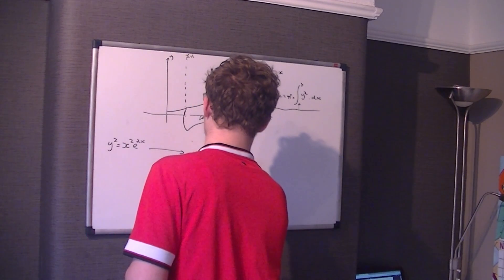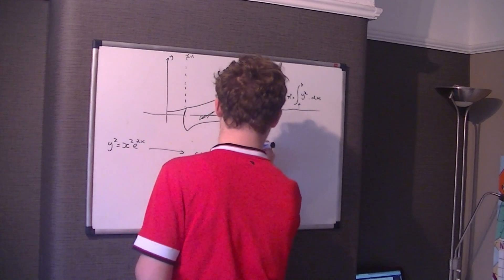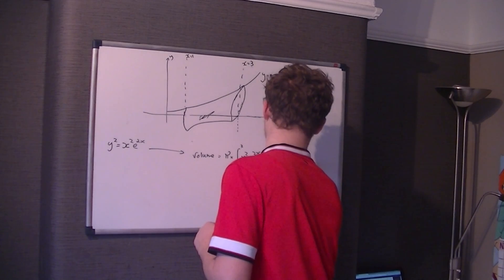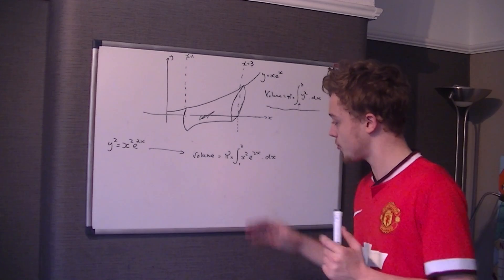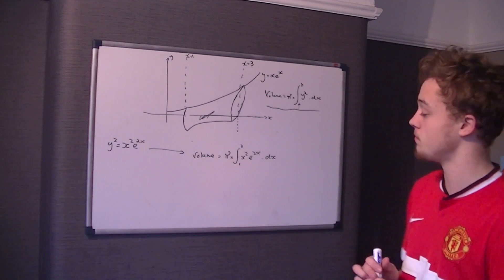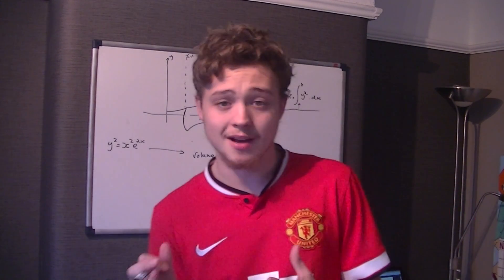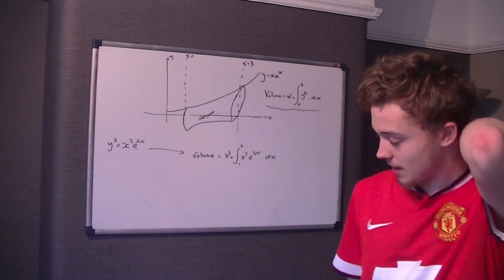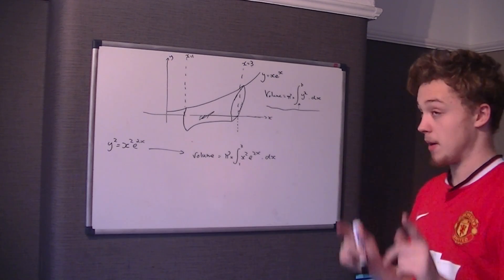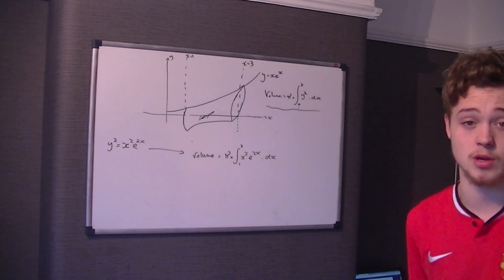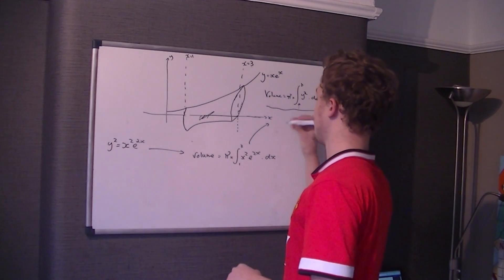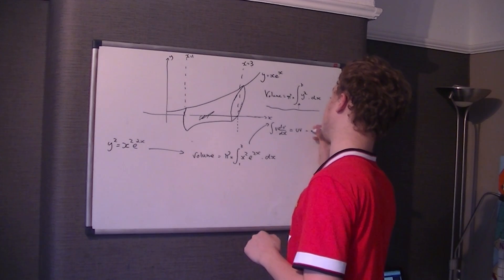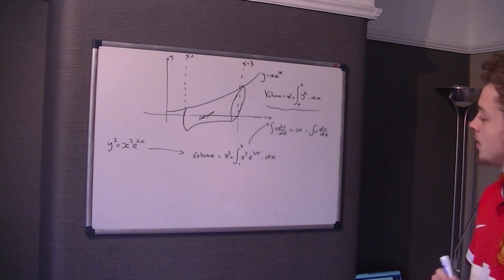Now follow up the rest of the formula. So volume equals π times the integral with limits of 3 and 1, because these are x limits, so we don't have to convert them to anything else. Y squared is x squared e to the 2x with respect to x. Now we can't simply integrate that straight off, because that'd be pretty tricky unless you're a genius. We have to use the only integration rule that integrates two products, which is integration by parts.